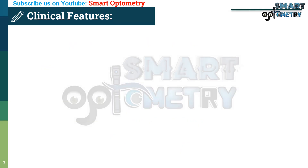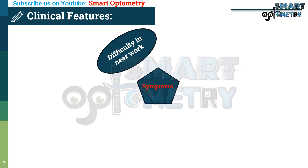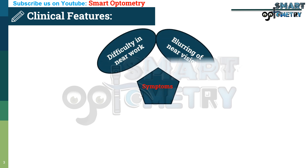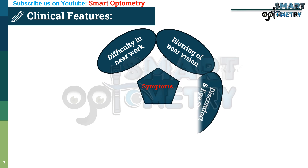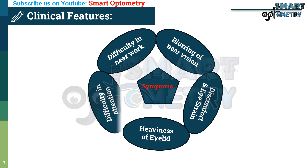Now let's see the clinical features of accommodation insufficiency. Symptoms include: difficulty with near work but comfort at distance, gradual blurring of vision, discomfort and eye strain associated with near tasks, heaviness of eyelids associated with near tasks, and difficulty with attention and concentration while reading.